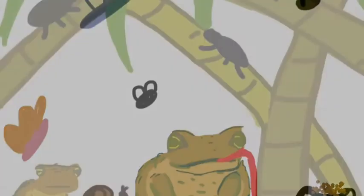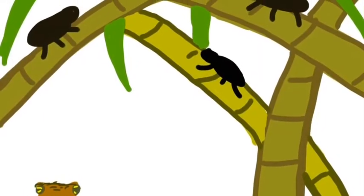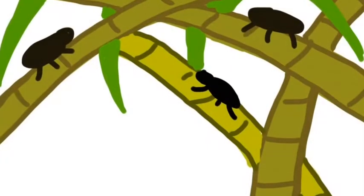They ate everything, that is, except the cane beetle, who stayed at the top of the sugar cane where the cane toads couldn't reach.